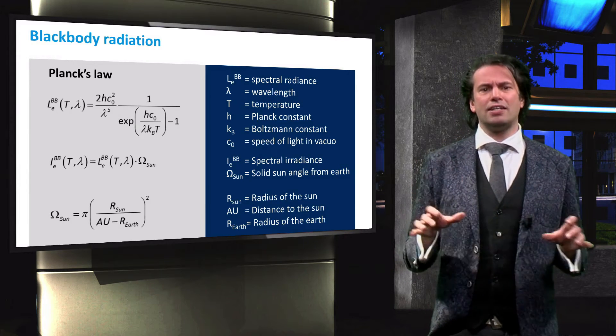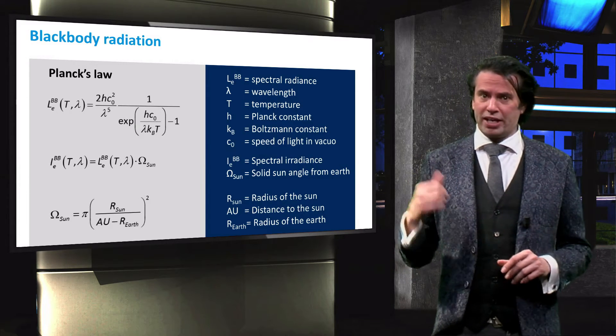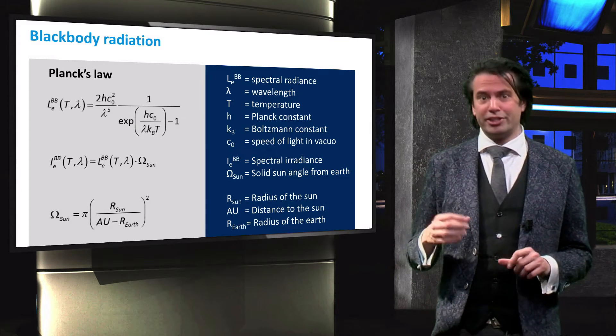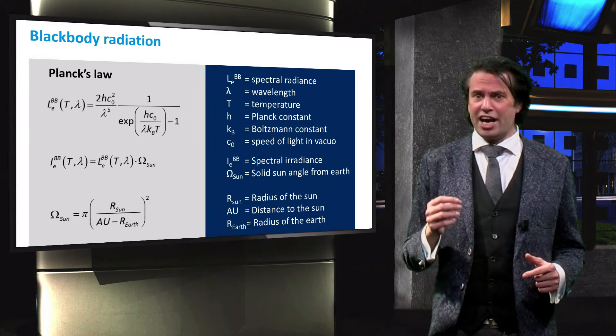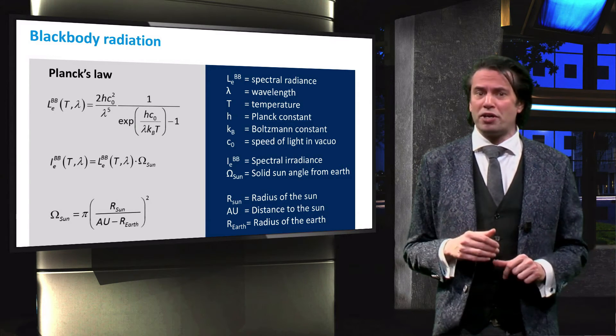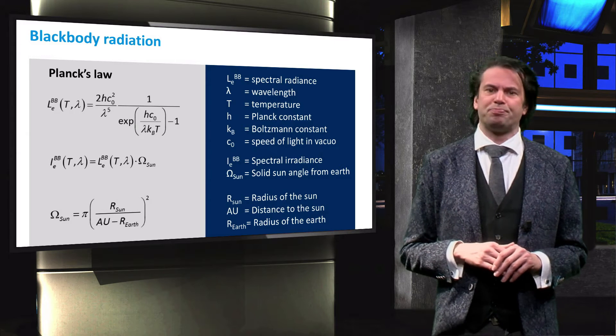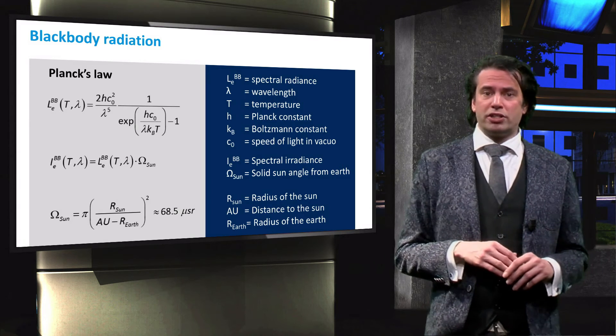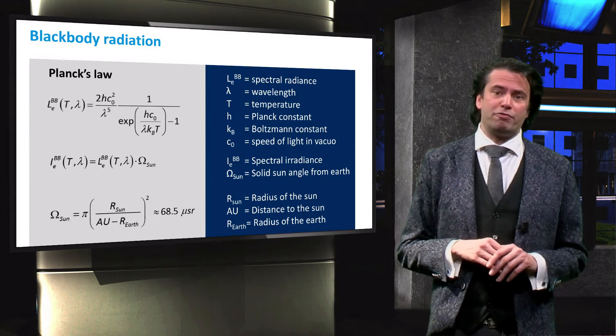The solid Sun angle is described by the following equation, where r Sun is the radius of the Sun, r Earth is the radius of the Earth and AU is roughly the distance from Earth to the Sun, known as the astronomical unit. The solid Sun angle is therefore equal to about 68.5 microsteradians.